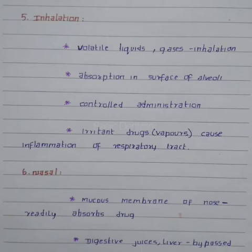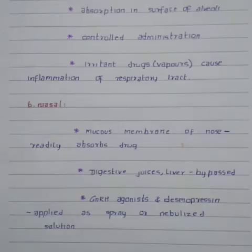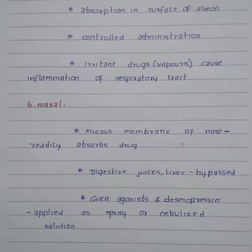The nasal route uses the mucous membrane of the nose, which readily absorbs most drugs. Digestive juices and the liver are also bypassed. Gonadotrophin-releasing hormone agonists and desmopressin are administered as a spray or nebulized solution through this route.